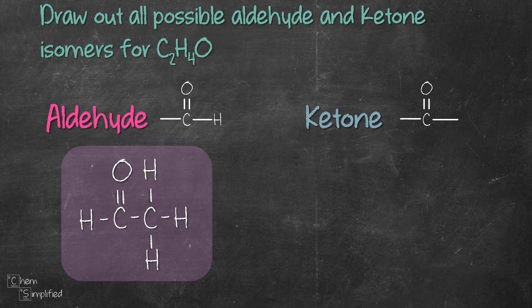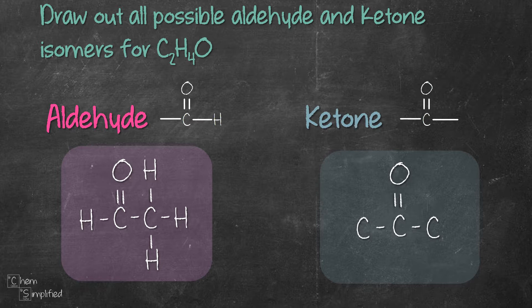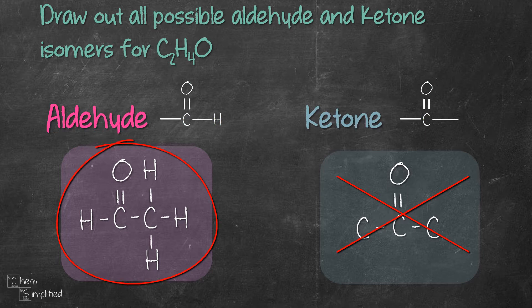Let's see if we can draw any isomer for ketone. The functional group for ketone is a carbonyl carbon sandwiched between two carbons. However, the formula C₂H₄O only has two carbons, and in order to draw a ketone we need at least three carbons. So that means there's no ketone for C₂H₄O — there's only one structure overall, which is the aldehyde.